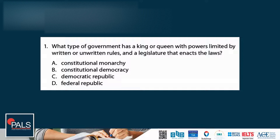Here's another basic civics question — these are the kind of things we should know as citizens, especially since we're going to have the right to vote. The question asks: what type of government has a king or queen with powers limited by written or unwritten rules and a legislature that enacts the laws? Key terms: king or queen means monarchy; it has a legislature and laws, and written or unwritten rules could be a constitution — so the answer is constitutional monarchy. If you don't know this, it's factual-based knowledge and there's not much you can do.